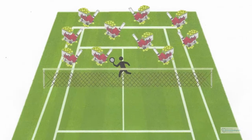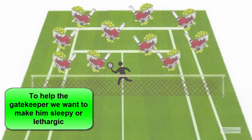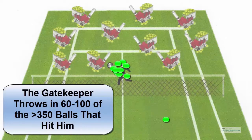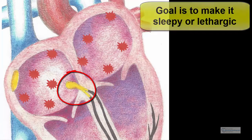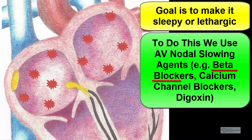Now let's see what we can do to help the gatekeeper and subsequently the AV node. In my analogy, a way to help the gatekeeper is to make him sleepy or lethargic. Once in this state, the gatekeeper does not care if he is being pelted with all of the tennis balls — it doesn't hurt anymore. Furthermore, he doesn't care how many balls he catches and throws into the other court. If he catches and throws 80 balls per minute, he is quite happy. This is the same with the atrioventricular node — the goal is to make it sleepy or lethargic. To do this, we might give medications like beta blockers, calcium channel blockers, or digoxin. These agents slow the AV node and essentially make it so it doesn't care.